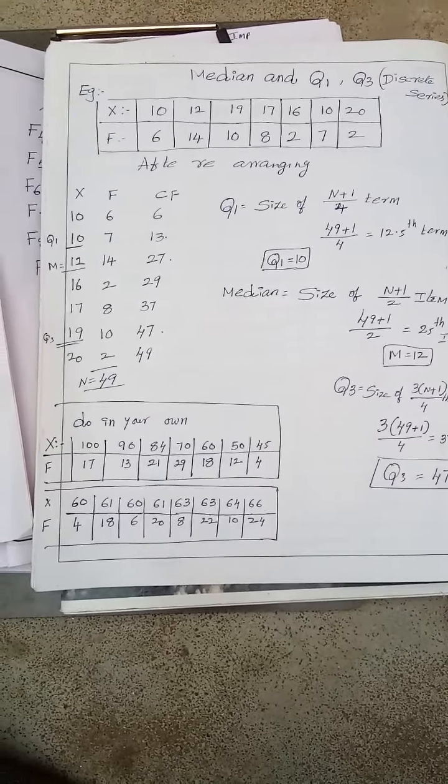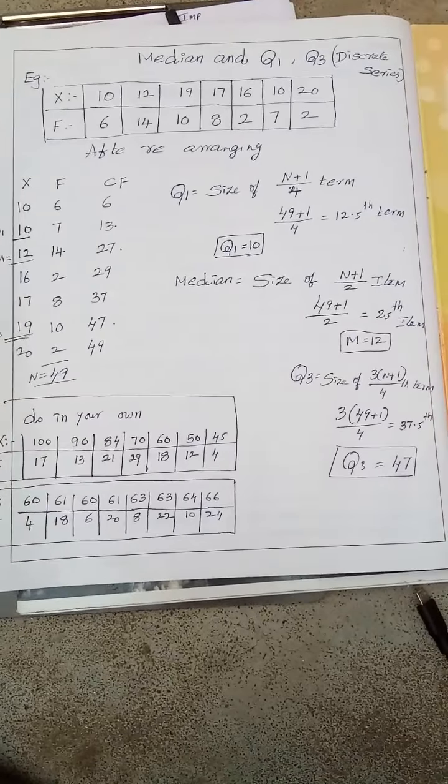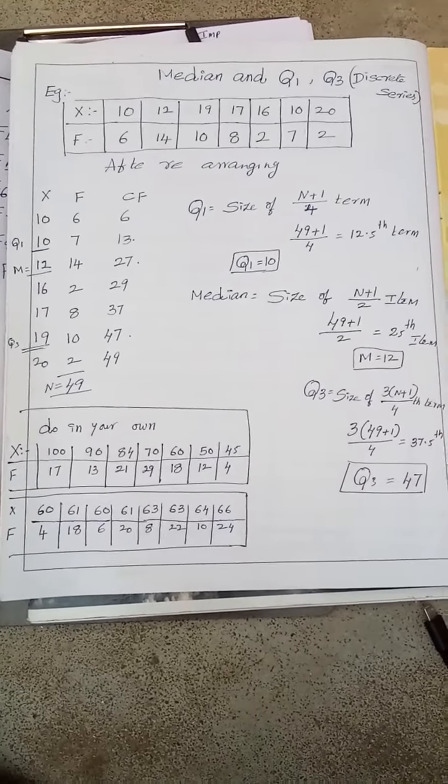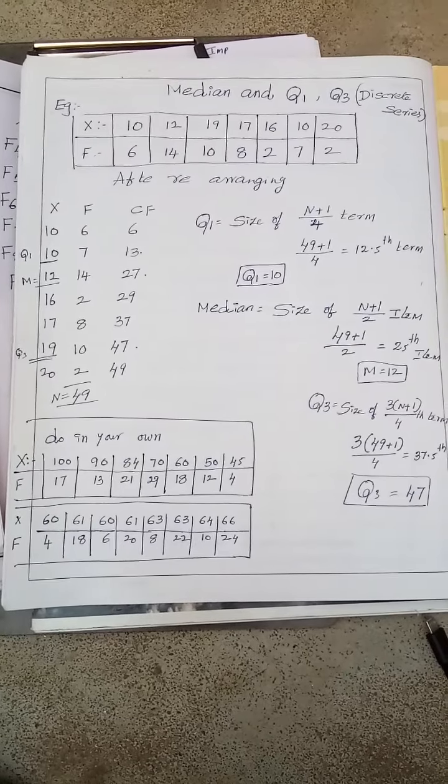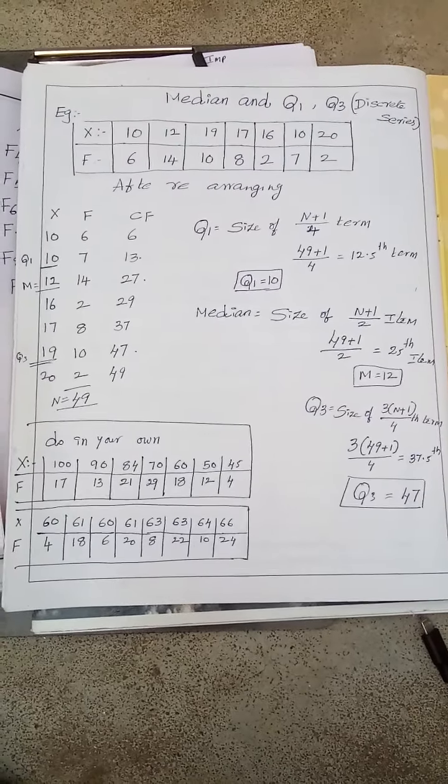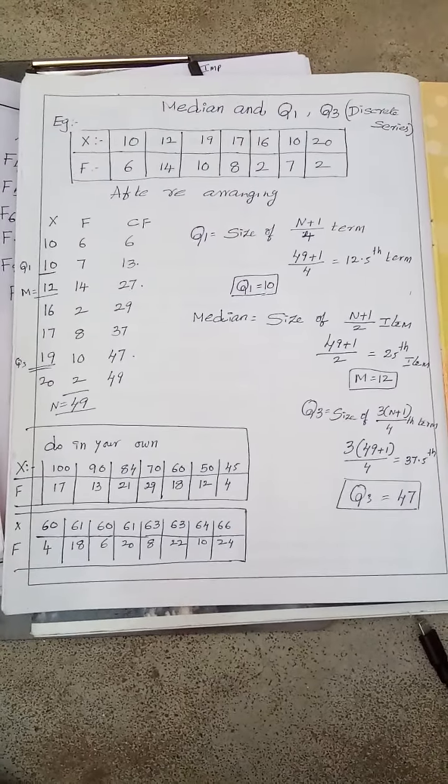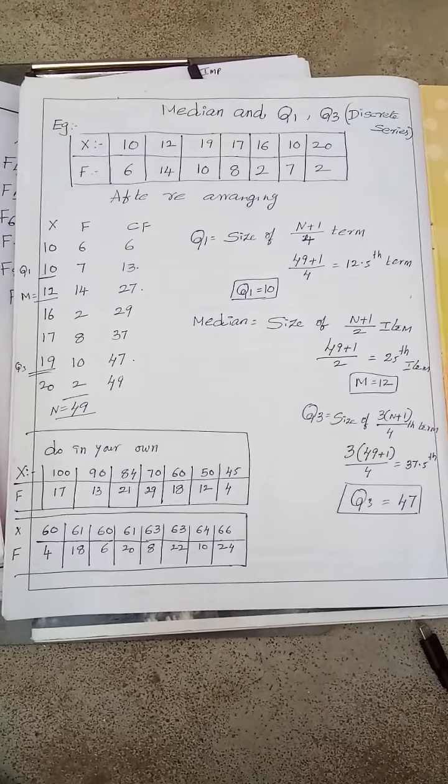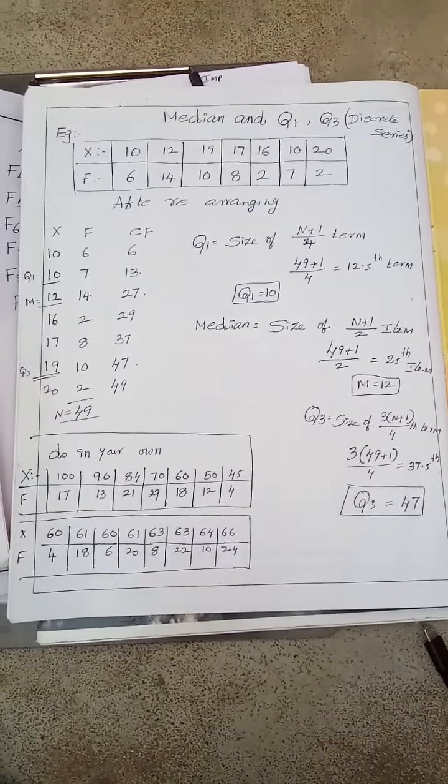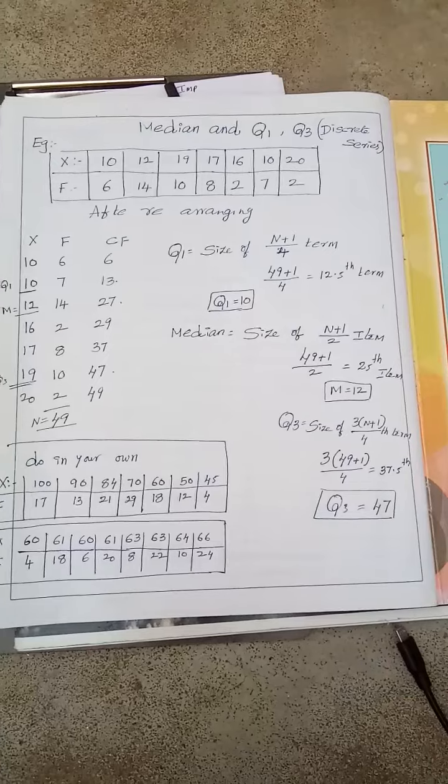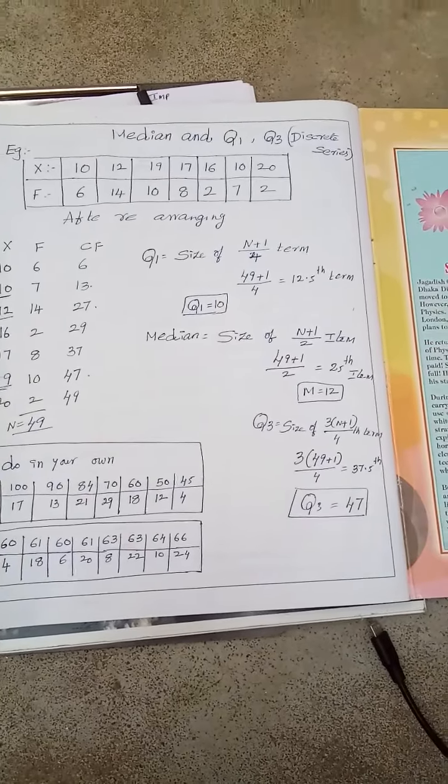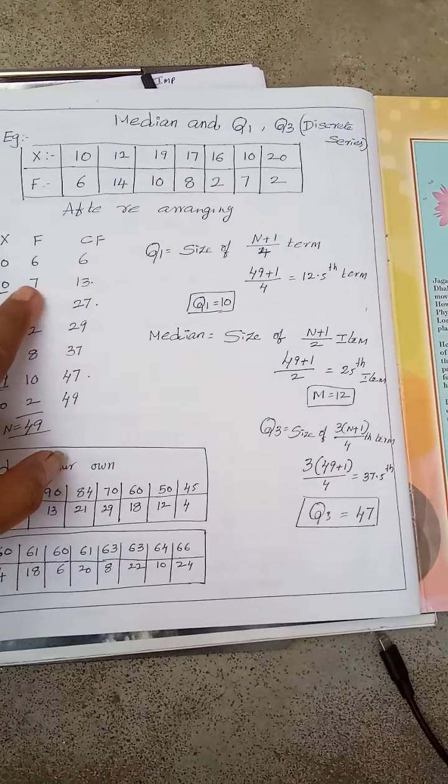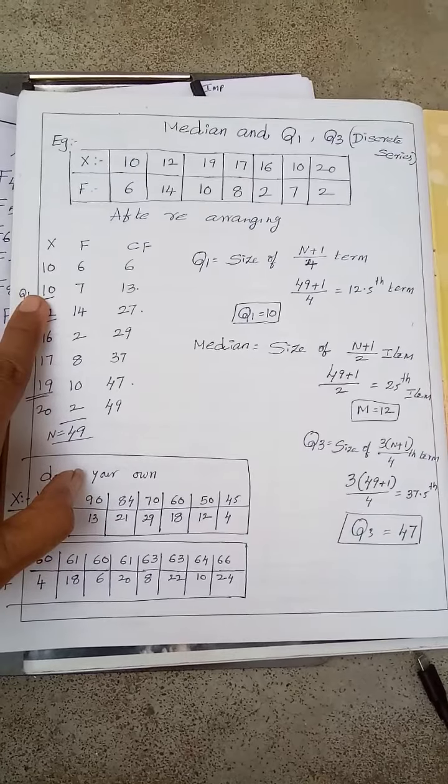You would know the formula Q1 is equal to size of n plus 1 by 4th term. So here the size is 49, 49 plus 1 by 4 means 12.5. I have to see where I am going to get 12.5. Here always the answers will be in variable X, that you have to remember. See in CF where you are getting, opposite to X that will be the answer.